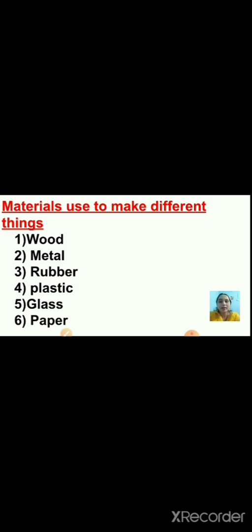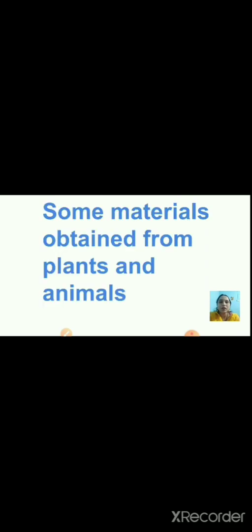We get many of these materials from nature. Some of them are obtained from plants and animals, and some are dug out of the earth. There are a number of things in our daily life that we get from plants and animals. From plants we get wood, rubber, and fibers like jute, cotton, and linen. These fibers we use to make clothes and many other important things like bags. We can make many things using materials we get from plants.